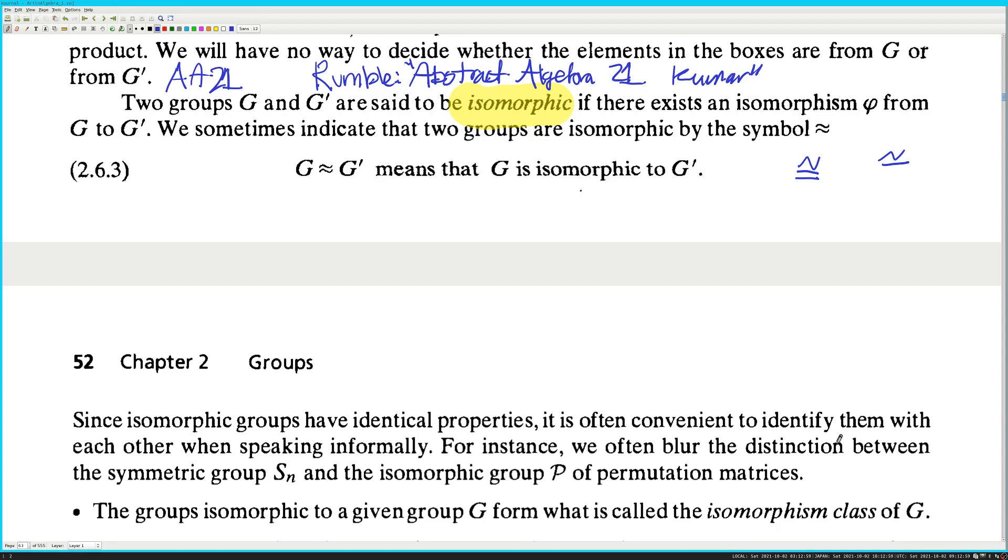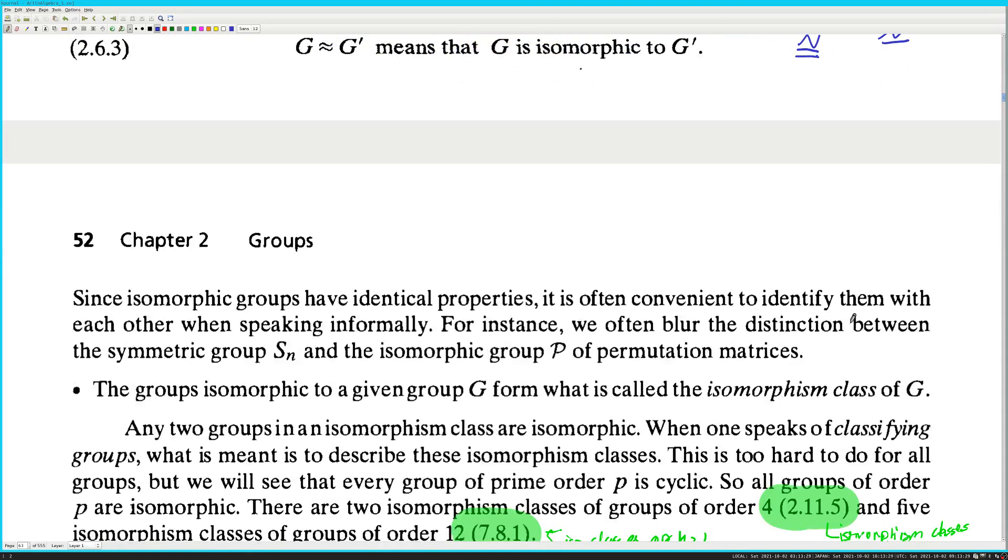Since isomorphic groups have identical properties... So this is what I mean. Is that from the perspective of group theory, group theory cannot tell the difference between two groups that are isomorphic. You cannot tell the difference using the tools of group theory. There is no way to tell the difference between two groups that are isomorphic. So that's what... Any... The difference between any two fields of mathematics, ninety percent of the difference is their definition of equals. So group theory cannot tell the difference between two groups that are isomorphic.